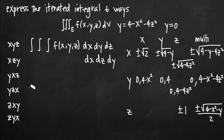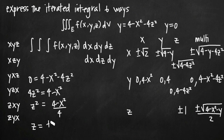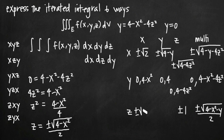For z in terms of x, I plug in 0 for y and get 0 = 4 - x² - 4z². Adding 4z² to both sides: 4z² = 4 - x², dividing by 4: z² = (4 - x²)/4. Taking the square root gives z = ±√(4 - x²) / 2. Those are my upper and lower limits of integration for z in terms of x.